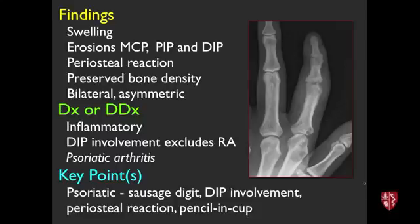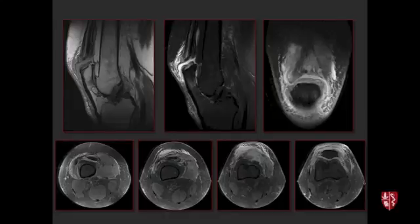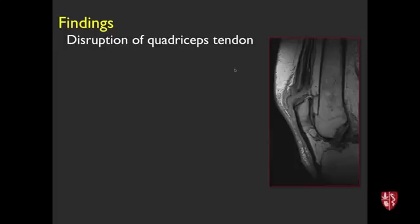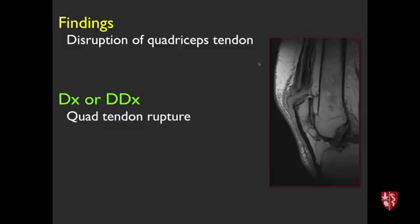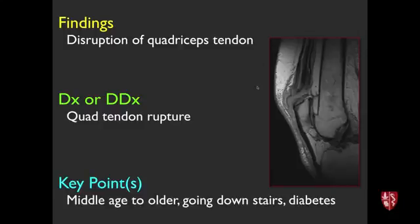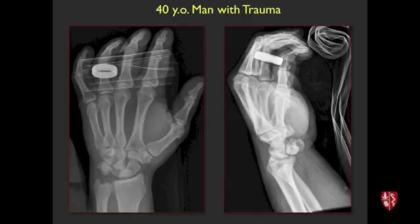Next case, older man in his 60s with knee pain. On sagittal MRI, there's disruption of the quadriceps tendon — fluid-filled gap, patella displaced superiorly. This is high-grade tearing, essentially a quadriceps tendon rupture. This is a fairly common abnormality in middle-aged to older patients, often occurring going down stairs. Patients with diabetes or pre-existing tendon problems are at higher risk.